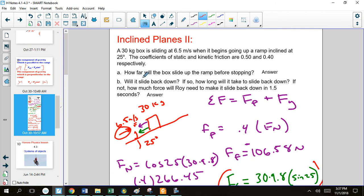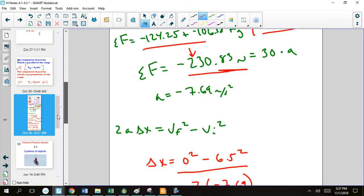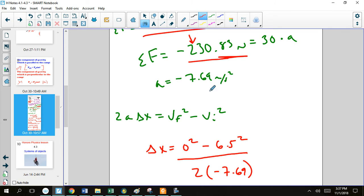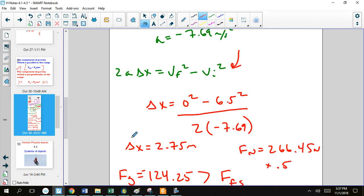But this isn't asking for our acceleration. It's not asking for our velocity, either. It's asking for how far up the ramp we end up going. So we need to know our displacement. So I'm going to point you in this direction, which is one of our displacement formulas. We know our acceleration. We know that we're going to stop. And we know what our initial velocity is. So we find that our displacement is around 2.75 meters. So that's how far up the ramp it goes.